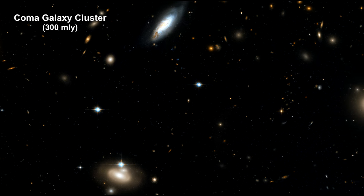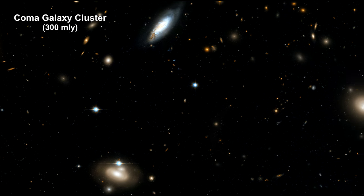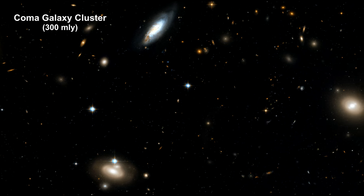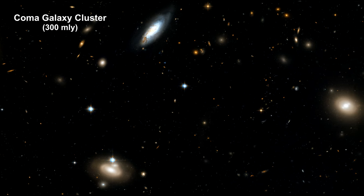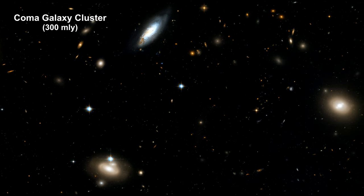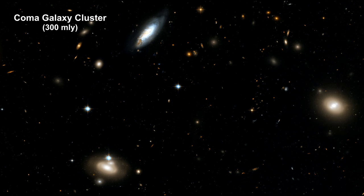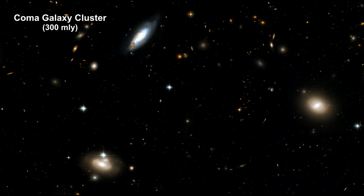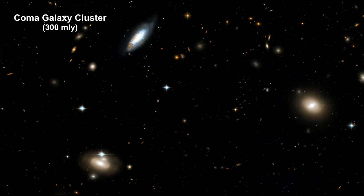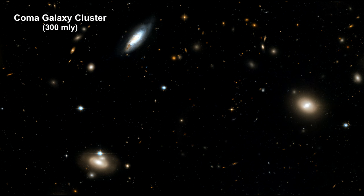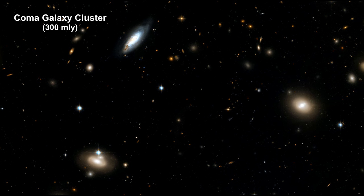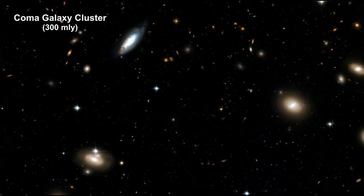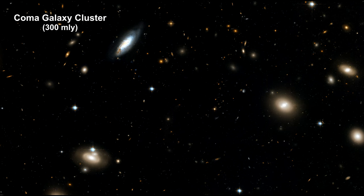Intergalactic light, also known as intracluster light, or ICL for short, is the light from stars that exist outside of galaxies, in the space between galaxies in a galaxy cluster. These stars are not gravitationally bound to any one particular galaxy in their cluster.